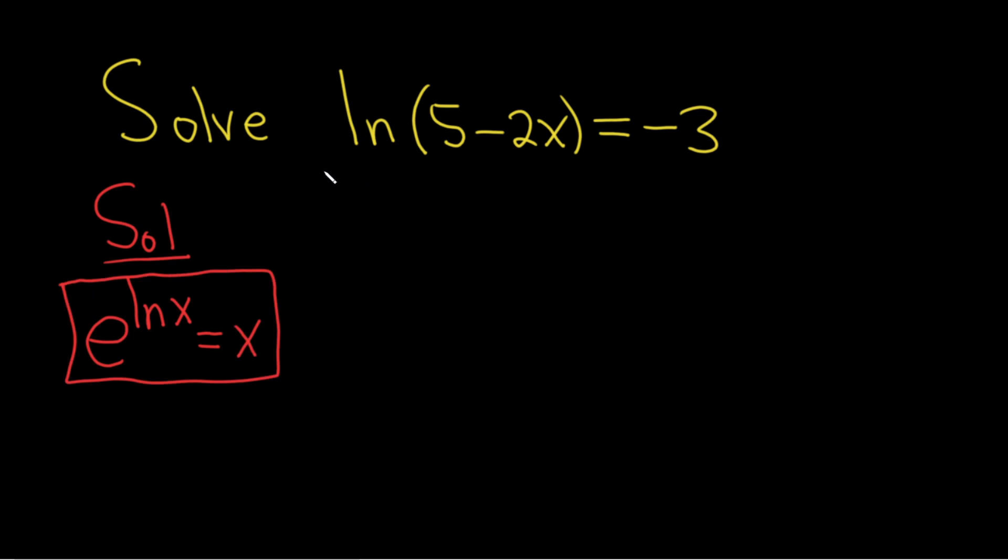So we'll start by putting an e here and putting an e here. We are exponentiating both sides. These go away, just like here in the formula, and we're left with x. So we have 5 minus 2x equals e to the negative 3.